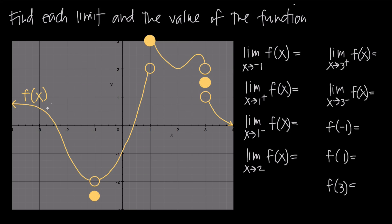In these kinds of problems, you're going to have a graph like this one — a totally absurd graph — and it's the graph of a function. In this case we'll call it f. We're going to be asked to find the limit of this function at various points and also the value of the function at various points. We'll go through each one and talk about what it means to find the limit at each of these values.